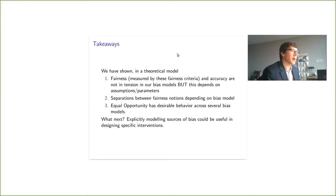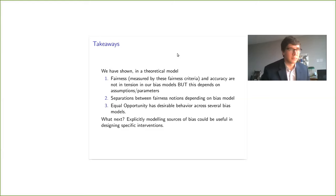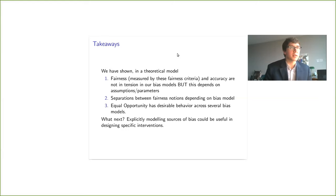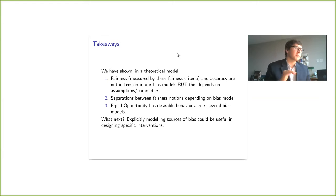What we have shown — and I think this is kind of fun — is that if we make some bias assumptions on the bias process, fairness and accuracy are not in tension, and these fairness constraints help us recover from biased data. There are some separations between fairness notions depending on the bias model, and equal opportunity works well in our bias models. This motivates a more general point: explicitly modeling sources of bias could be useful because then you can create interventions that are both more fair and more accurate — have your cake and eat it too. The problem of recovering from biased data when the data doesn't measure what you actually want it to measure is quite insidious, and I think there are some good open questions there.